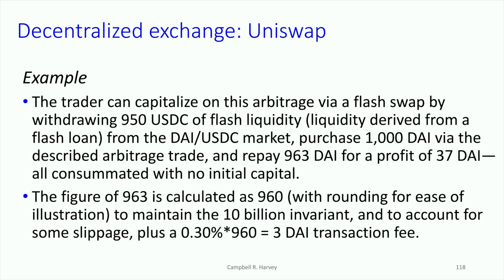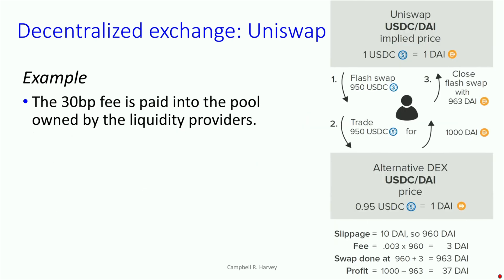The 963 is calculated from 960 — with some rounding — and we need to maintain the invariant of 10 billion. There is some slippage as a result of that, so this is not without slippage. There will also be a 30 basis point fee that's going to be paid into the pool.